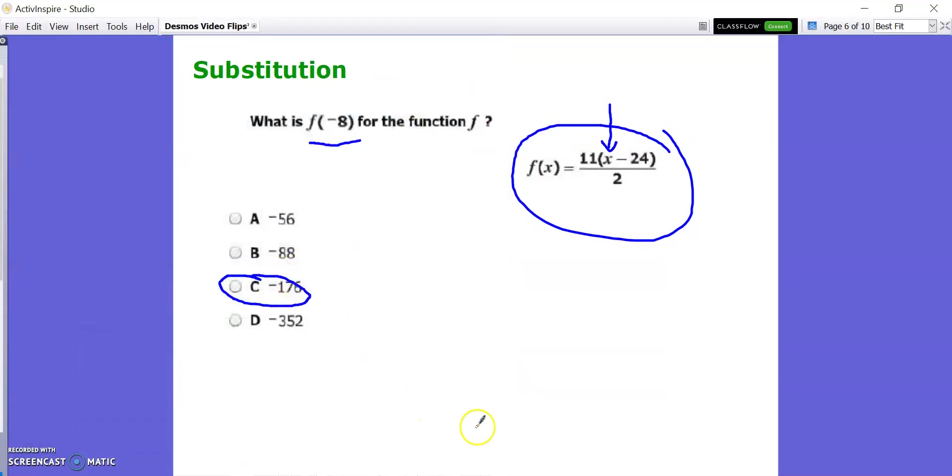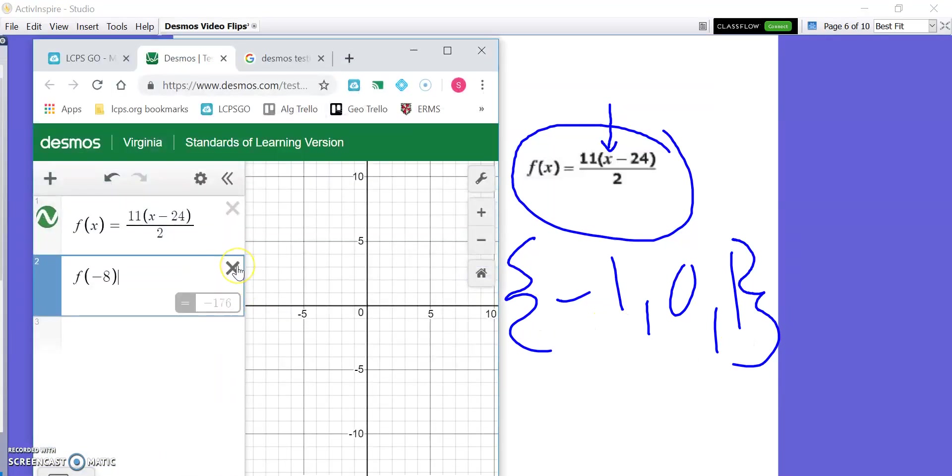Now there's going to be some problems that they ask for multiple outputs. So there's some problems that are going to say like the domain, they'll say the domain is, I don't know, let's pick some numbers. Let's just pick some easy ones. Say negative 1, 0, and 1. And they're going to say, find the range. So we're just going to use the same equation and use this domain. I'm going to go back to here and I'm going to get rid of this.